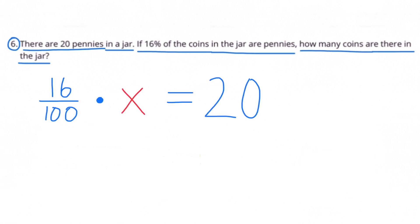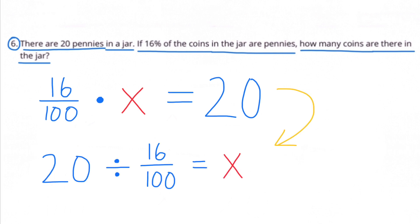Sixteen hundredths times x equals twenty. We have to solve for x, so we need to get x by itself. Since sixteen hundredths times x equals twenty, then twenty divided by sixteen hundredths will equal x. I can rewrite the equation as twenty divided by sixteen hundredths equals x. That's no different than saying two times five equals ten, so ten divided by five equals two. Use simple examples like that to help remember how to set these up.